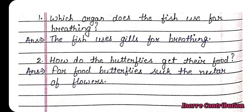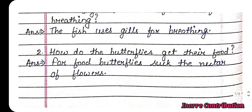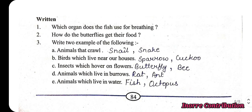Second review question: how do butterflies get their food? Butterflies suck the nectar of flowers. Third question: write two examples of the following — animals that crawl: snail, snake; birds which live near our houses: sparrow, cuckoo; insects which hover on flowers: butterfly, bee; animals which live in burrows: ant, mouse.